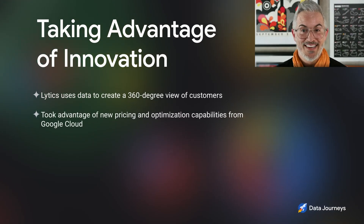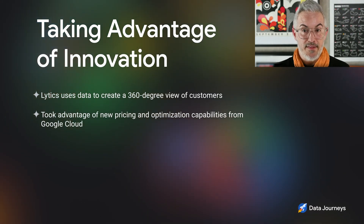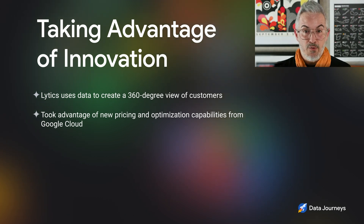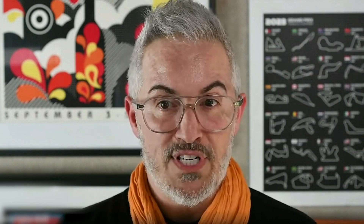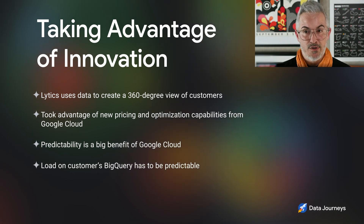The shorthand for everything I just said is that we, Lytics, are the customer 360 company. We use the data to create this view of each of your customers so that you're able to do modeling on top of it and ultimately activate that information. When we saw the innovations that Google Cloud was bringing out with new pricing and optimization capabilities, our initial experimentation led us to two really critical takeaways. The first is that predictability is a big outcome of the innovations that Google Cloud has been bringing to market.